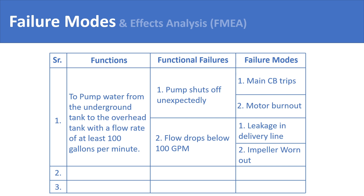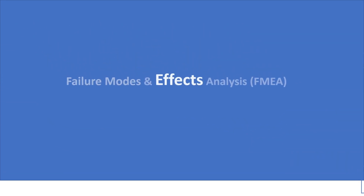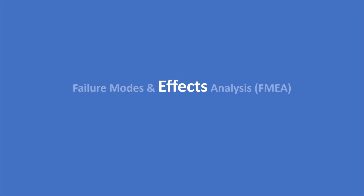In the same way, you would list down all the possible failure modes of each of the functional failures defined in your earlier steps of the process. The final step in the failure modes and effects analysis is to elaborate the effects — referring to the effects of each of the failure modes that were listed.